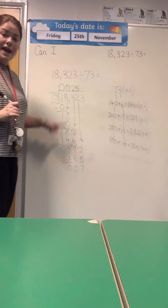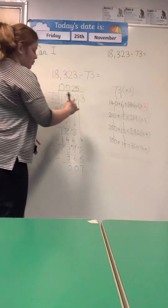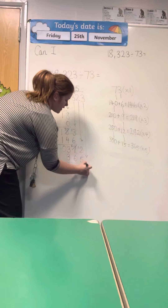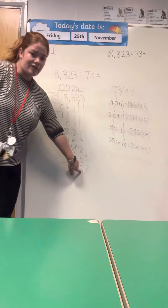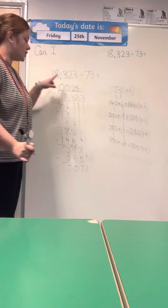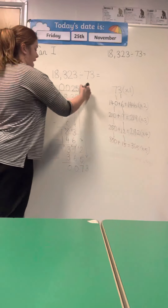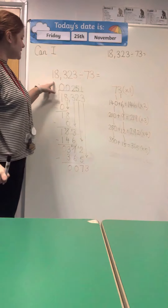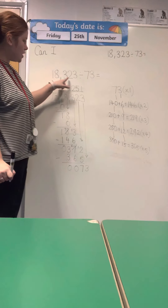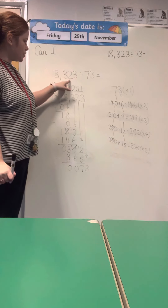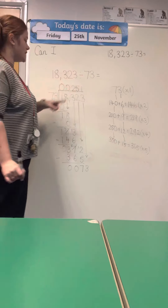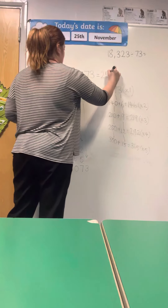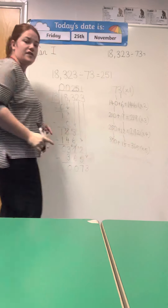Now we're back to bring it on down — bring down that 3. I've got 73 divided by 73, which is 1. So I can see that 18,323 divided by 73 is 251.